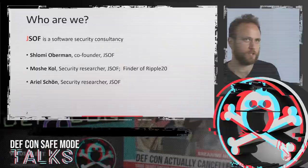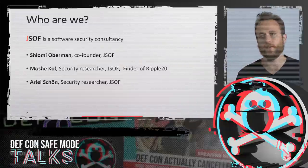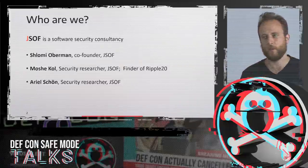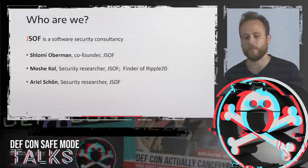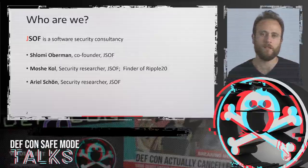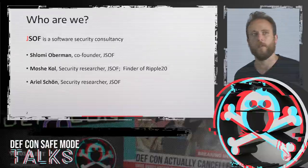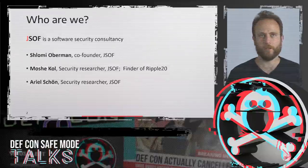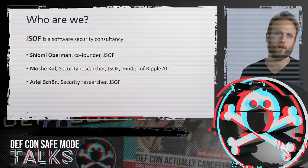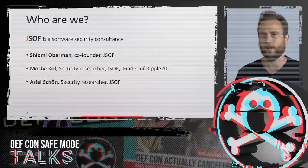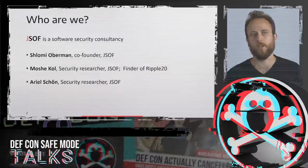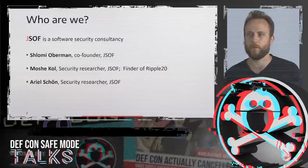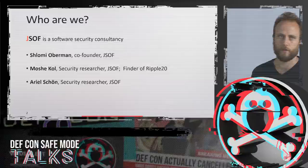A little bit about us, JSOF. JSOF is a software security consultancy. We do a lot of security research, penetration testing. We help companies with their secure development processes, as well as some training. My name is Shlomi Overman, I'm a co-founder at JSOF. Together with me today, we'll be speaking with Moshe Kohl, a security researcher at JSOF and the finder of the Ripple20 vulnerabilities, and Arielle Shon, a security researcher at JSOF that was also heavily involved in the research.